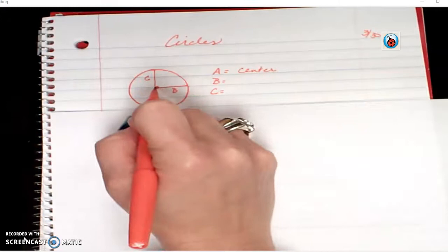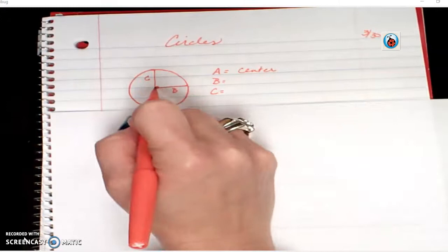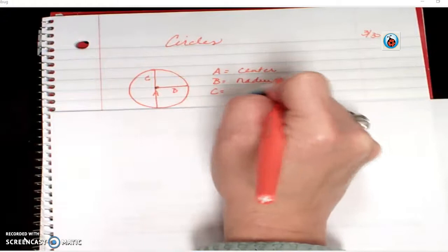When you go from the center to halfway across, that's called the radius. But if I go all the way across the circle, that's called the diameter.